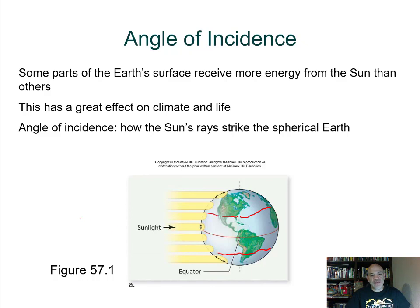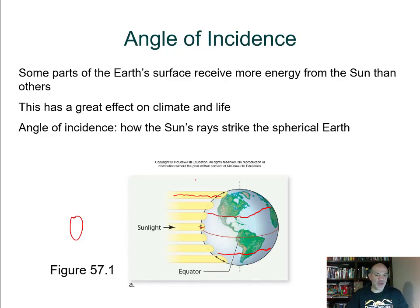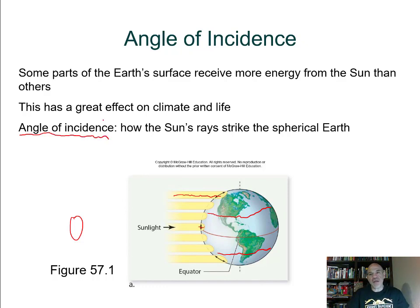The most direct sunlight hits straight on around the equator. As you move north or south in latitude, sunlight hits the Earth at an angle due to the curvature of the Earth. The same amount of energy gets spread over a wider area, making it less intense — this explains why it gets cooler as you move away from the equator. The angle at which radiant energy hits the Earth is called the angle of incidence, and it plays an important role in climate.